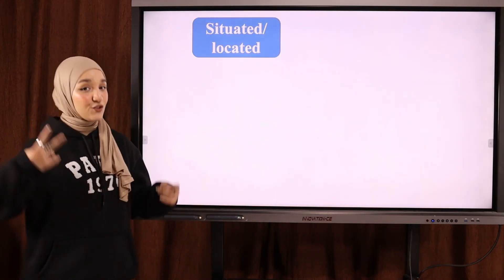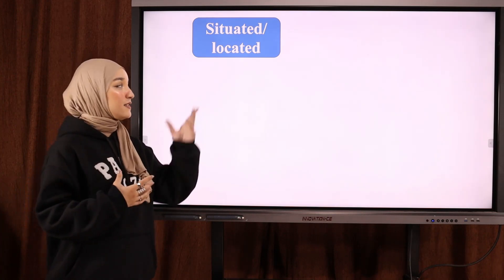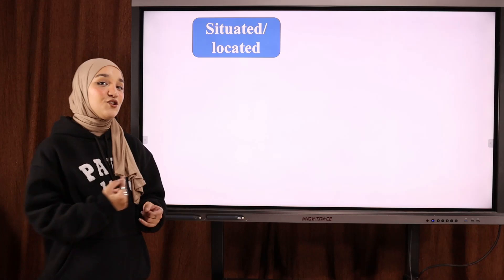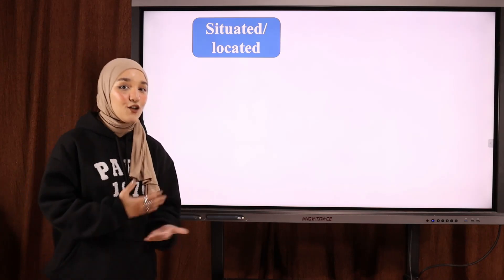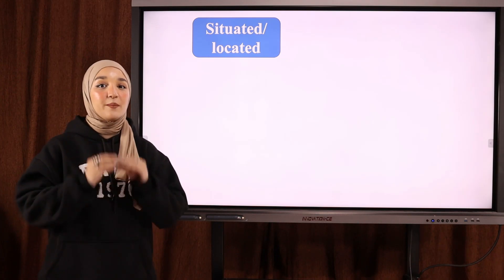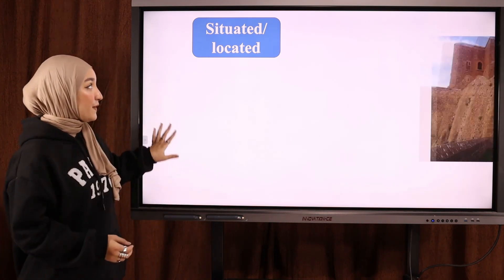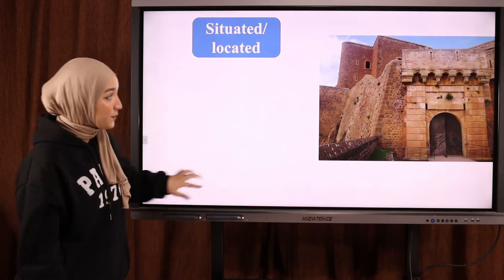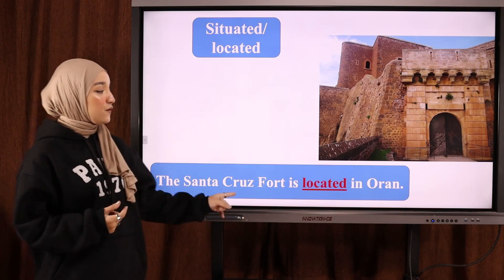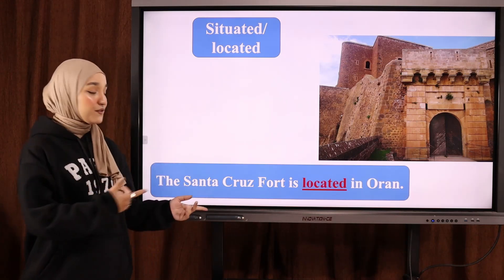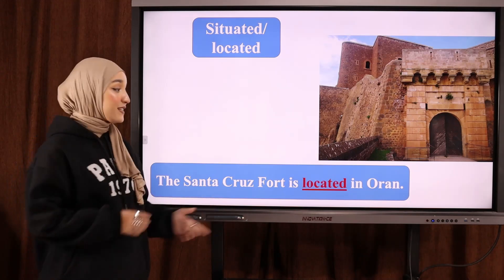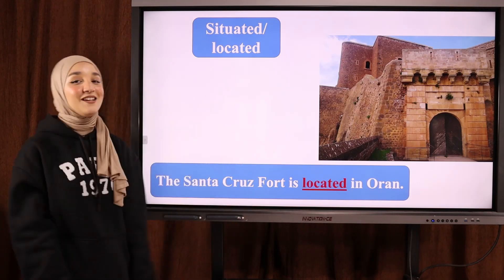The next two words are interchangeable — يمكنكم أن تستعملوا هاتين الكلمتين بشكل متبادل because they have similar meaning. So: 'situated' and 'located' — يقع في / تقع في. We are talking about a particular location. Example: 'The Santa Cruz fort is located in Oran' — يقع حصن Santa Cruz في ولاية وهران. So situated and located both refer to the position or location of something.